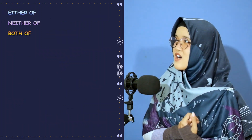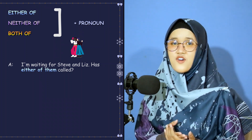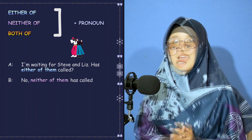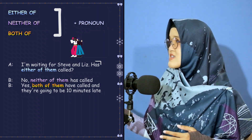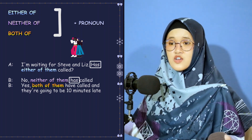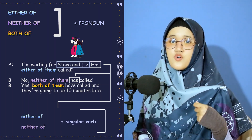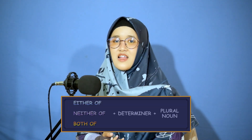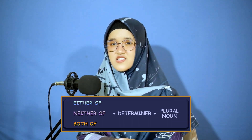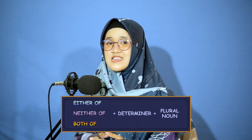Either of, neither of, both of — plus pronoun. 'I'm waiting for Steve and Liz. Has either of them called?' 'No, neither of them has called.' 'Yes, both of them have called and they are going to be 10 minutes late.' Why use 'has' — a singular verb? Because 'either of' and 'neither of' take a singular verb, even though we are speaking about two people. With 'either' and 'neither' we often use determiners like my, your, his, her, their, this, those.